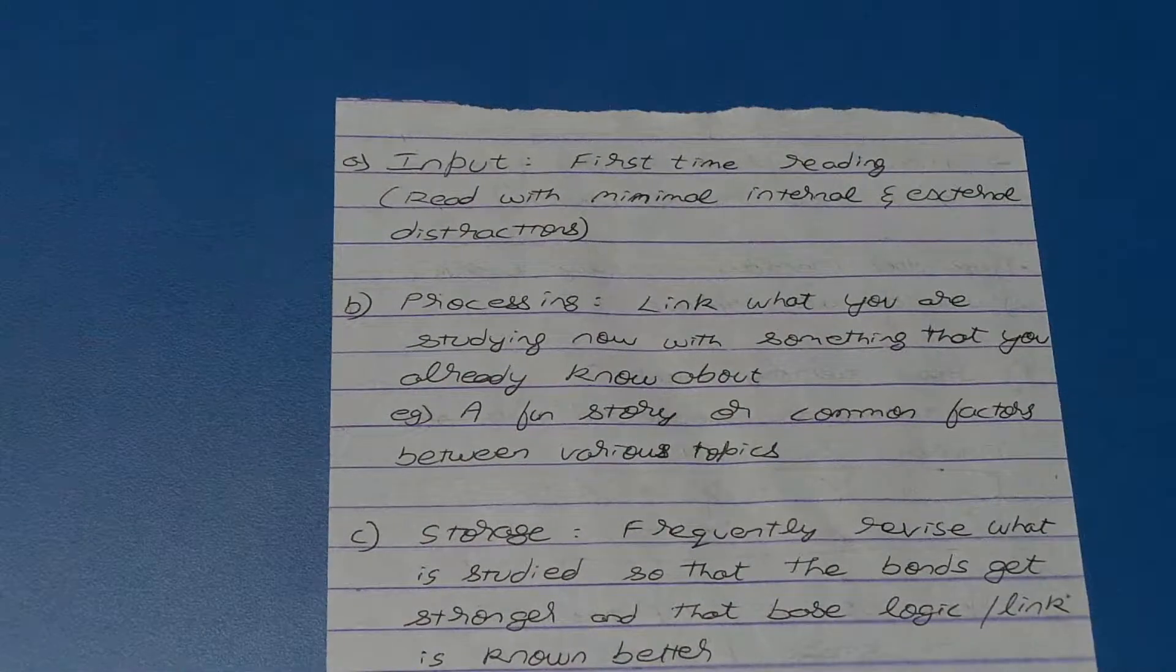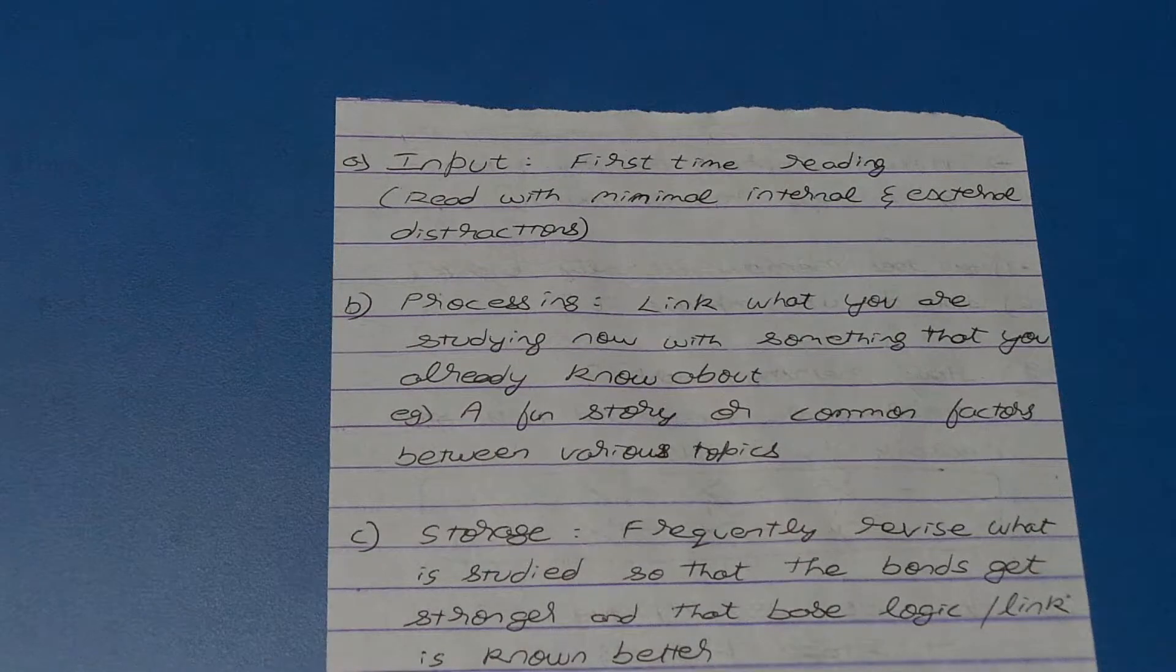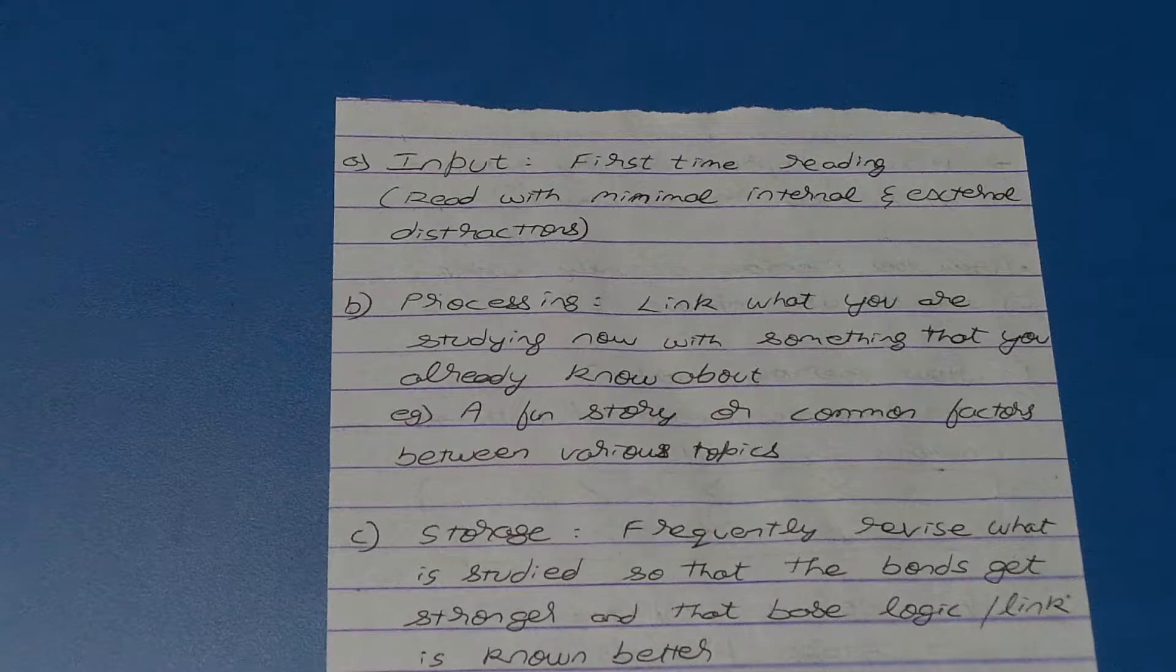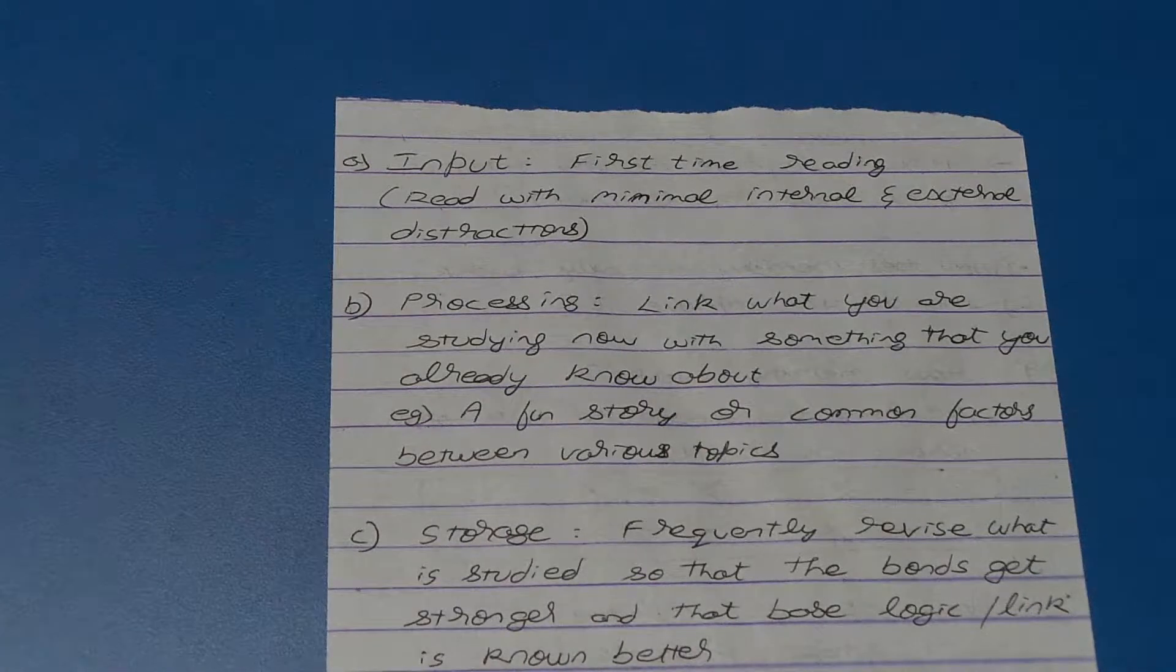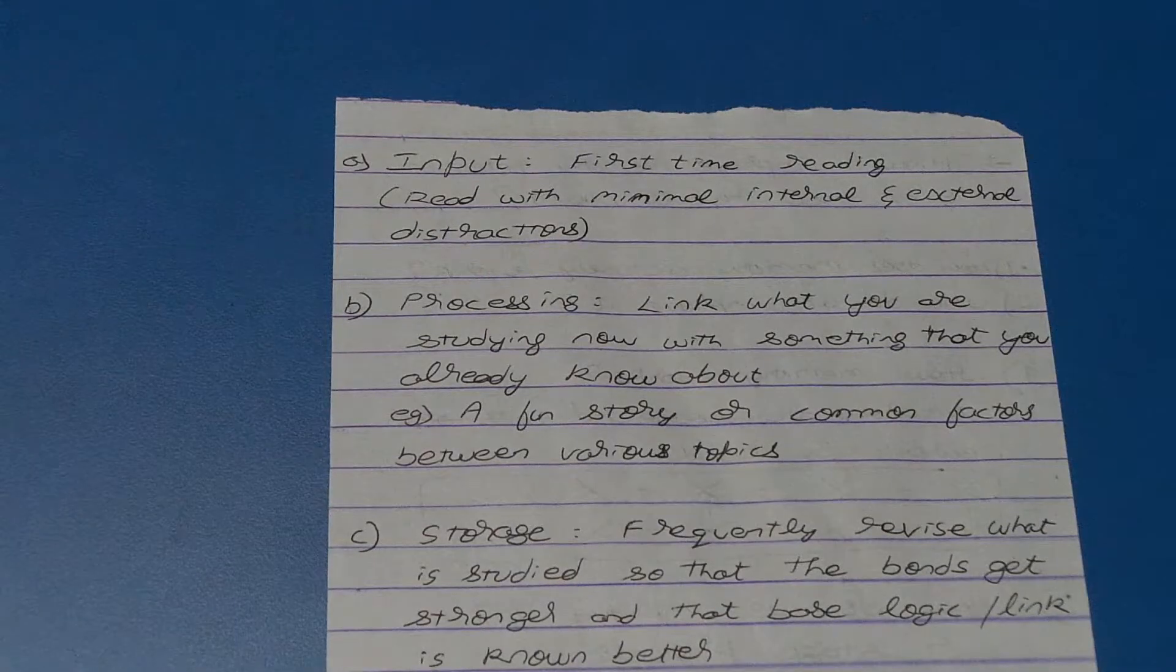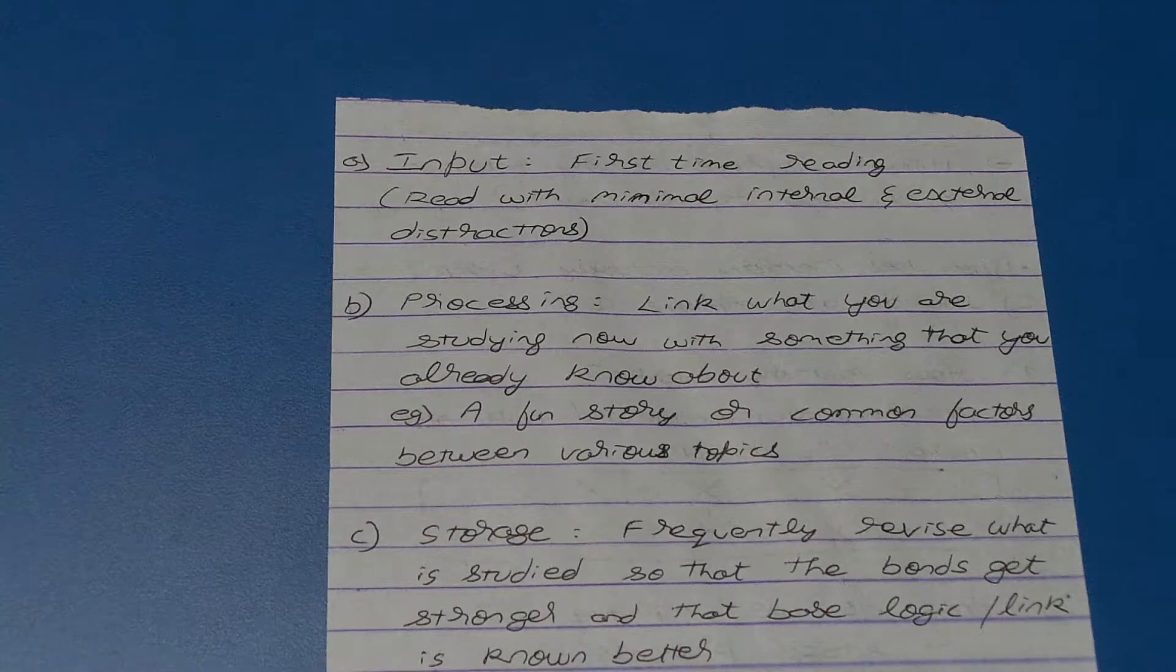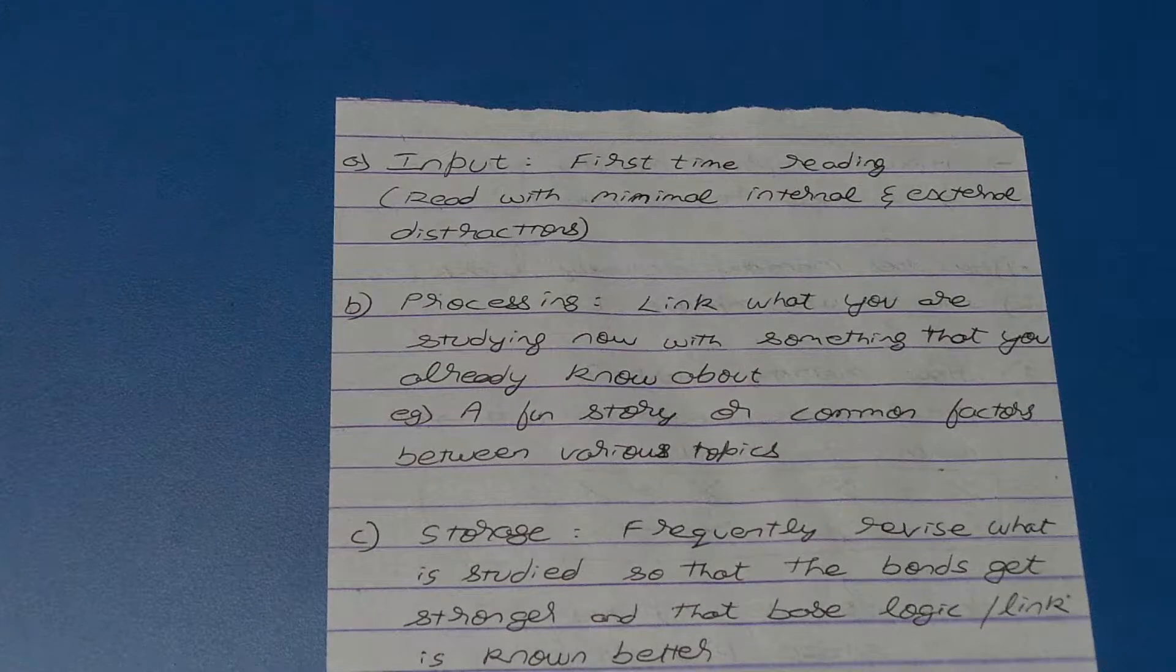The input stage is when you are feeding data into your brain. Imagine that you are feeding something into your brain for the very first time and you don't have any background material to which you can link what you are studying. That time it's advisable that you read in a place where there are lesser external distractions.